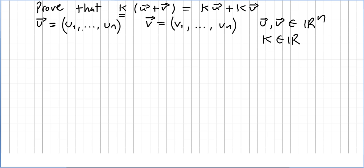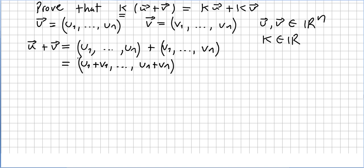Vector u is the vector (u1, u2, ..., un) and vector v is the vector (v1, v2, v3, ..., vn). Vectors u and v are both in the vector space Rn, and k is a scalar from the real numbers. First, u plus v will be (u1, u2, ..., un) plus (v1, v2, ..., vn), which gives us (u1+v1, u2+v2, ..., un+vn).